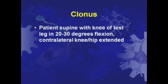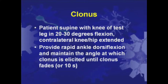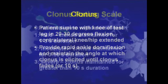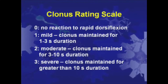Clonus of the plantar flexors is measured as the response to a rapid, passive dorsiflexion of the ankle. The ankle is rapidly dorsiflexed to an angle that triggers clonus, and the duration of clonic bursts is timed. Based on the duration of clonic activity, a score between zero and three is assigned: zero is no reaction; one is clonus maintained less than three seconds; two is clonus persisting between three and ten seconds; and three is clonus persisting for more than ten seconds.